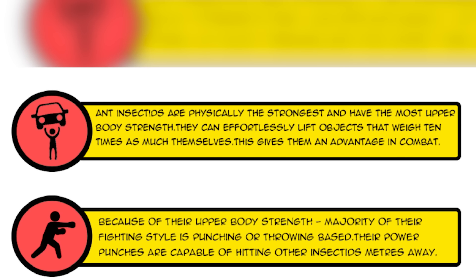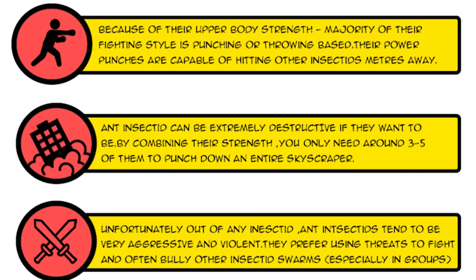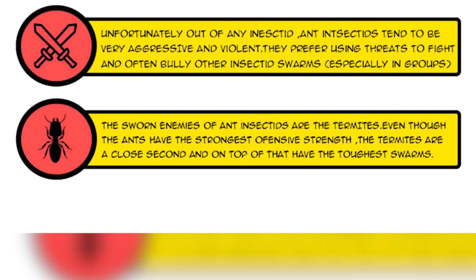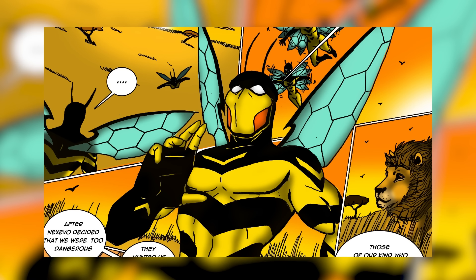Out of all the insectid types, termites tend to be the most peaceful — generally more chill, they avoid direct conflict and would rather eat food, dance, and have fun. Ant insectids are their main enemies because termites are the only insectids who can take on ants in a fair fight. Ant insectids are physically the strongest, with the most upper body strength — they can effortlessly lift objects 10 times their own weight on easy mode, and up to 50 to 100 times themselves. Their fighting style is mostly punching or throwing things, and their power punches can send other insectids flying meters away.